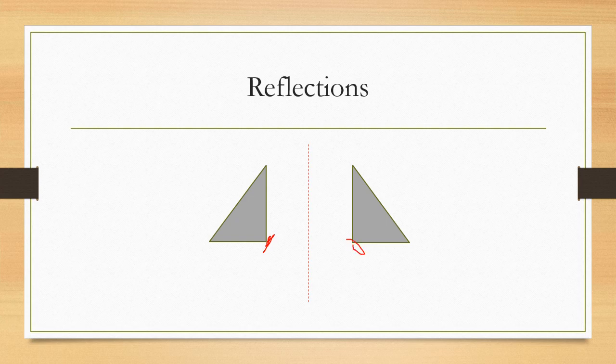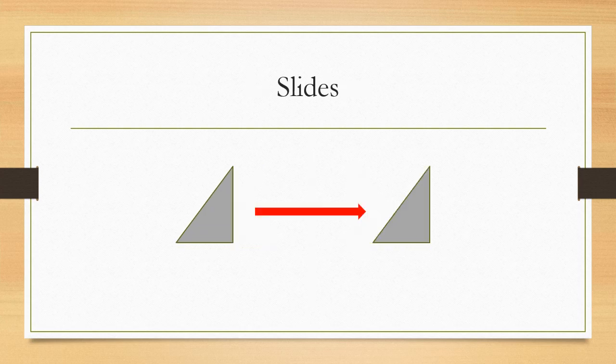Consequently, pieces furthest from the line are reflected furthest from the line. Slides, also called translations in geometry, are just moving the figure from one spot to the next where its orientation doesn't change at all. This is different than a reflection and different than a rotation.